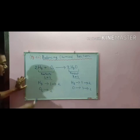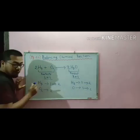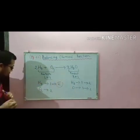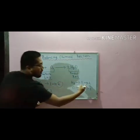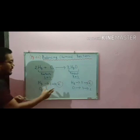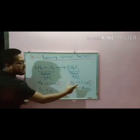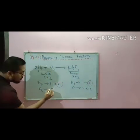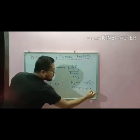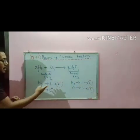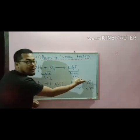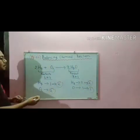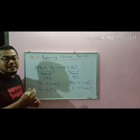Now you see — mercury: two on LHS, two on RHS. That means LHS is equal to RHS. Oxygen: two atoms here, two atoms here as well. That means mercury is balanced as well as oxygen is balanced. Our equation is balanced.